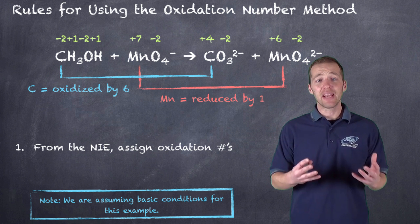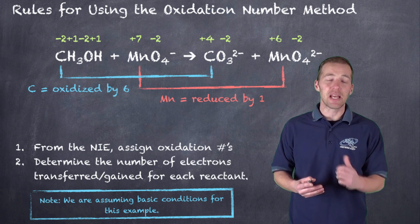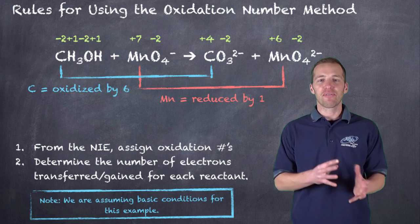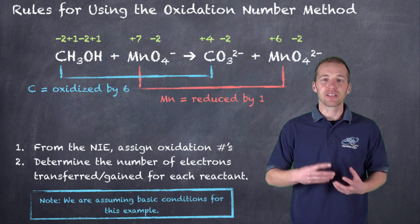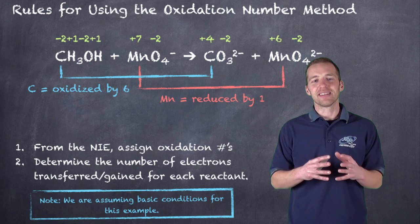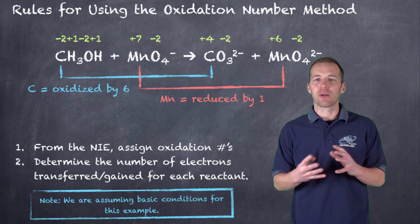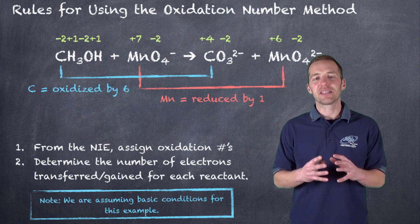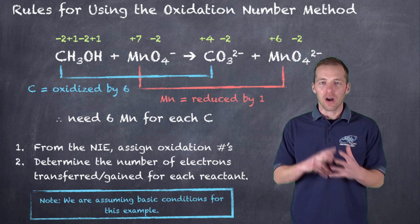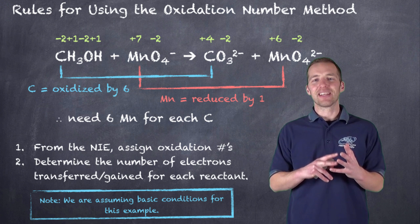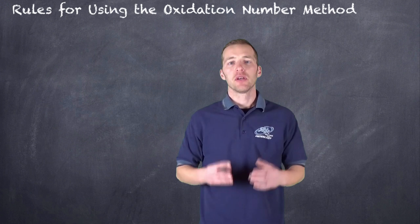Manganese is being reduced from plus seven to plus six, so its oxidation number is going down. This next step is crucial: figuring out by what factor these two differ — essentially finding the lowest common multiple. Carbon is being oxidized by six and manganese is being reduced by one, so we need six manganese for each carbon. That gives us a six-to-one ratio between manganese and carbon.